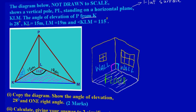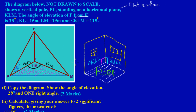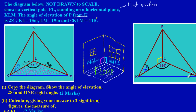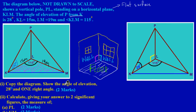Having said that, we can just simply go ahead and copy the diagram. Here is our diagram that we have copied and completed. Based on the information they said we were supposed to show — the angle of elevation of 28 degrees — we have shown it there. And they asked us to show one right angle, so here is our one right angle, angle KLP.